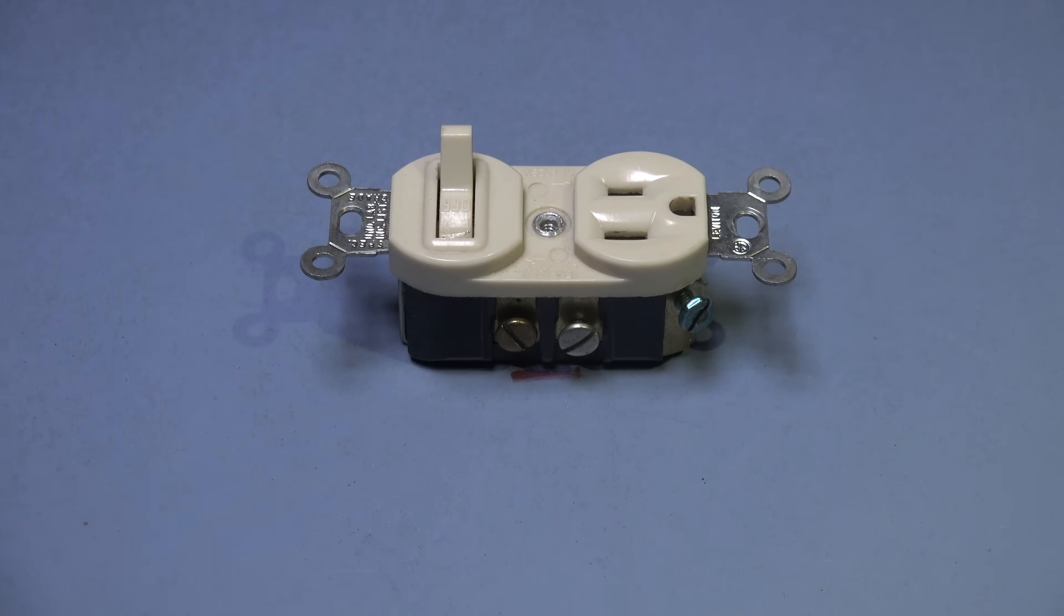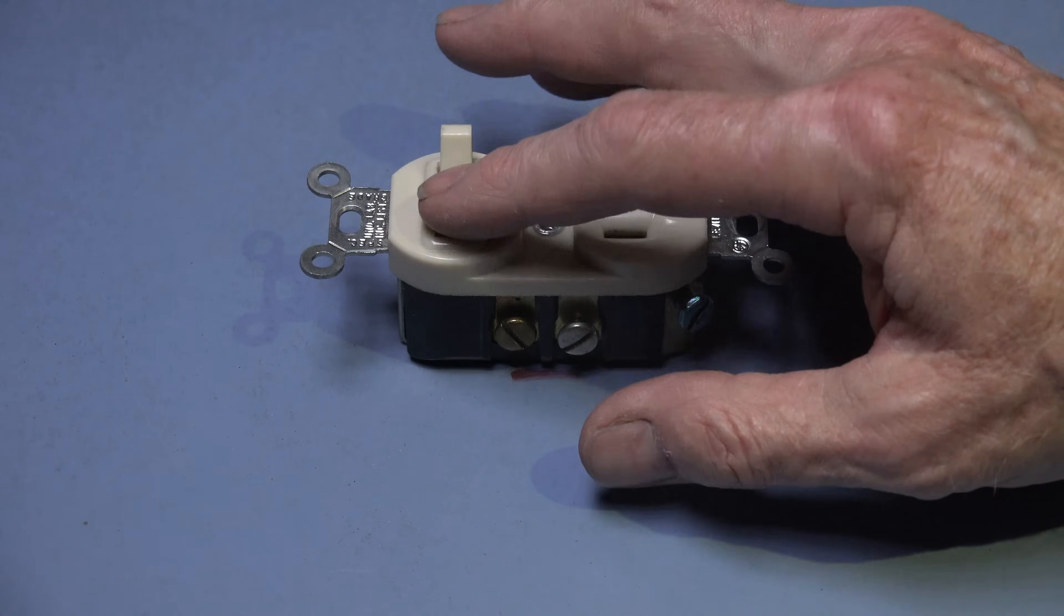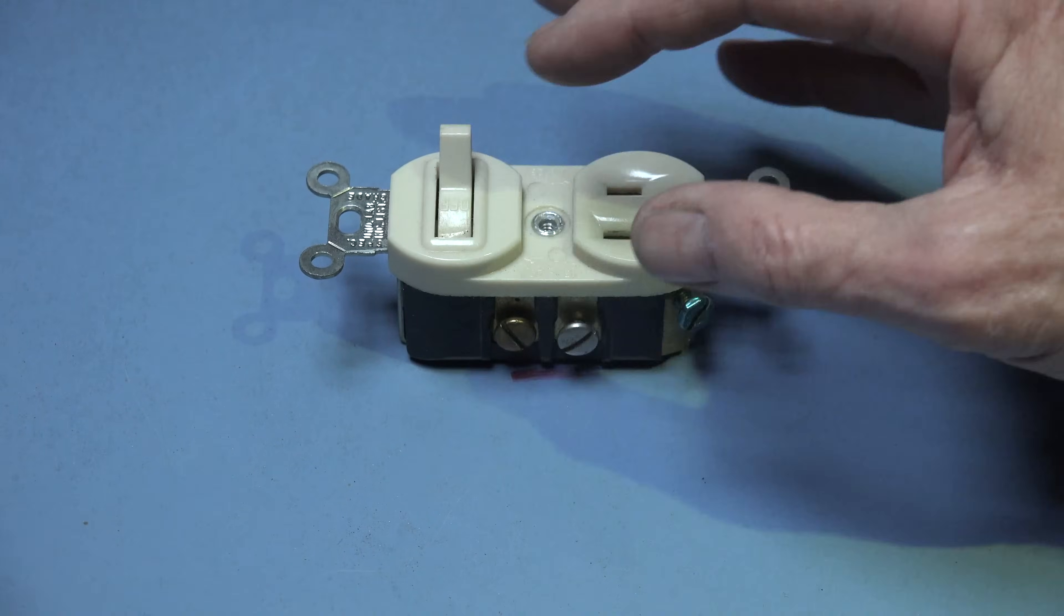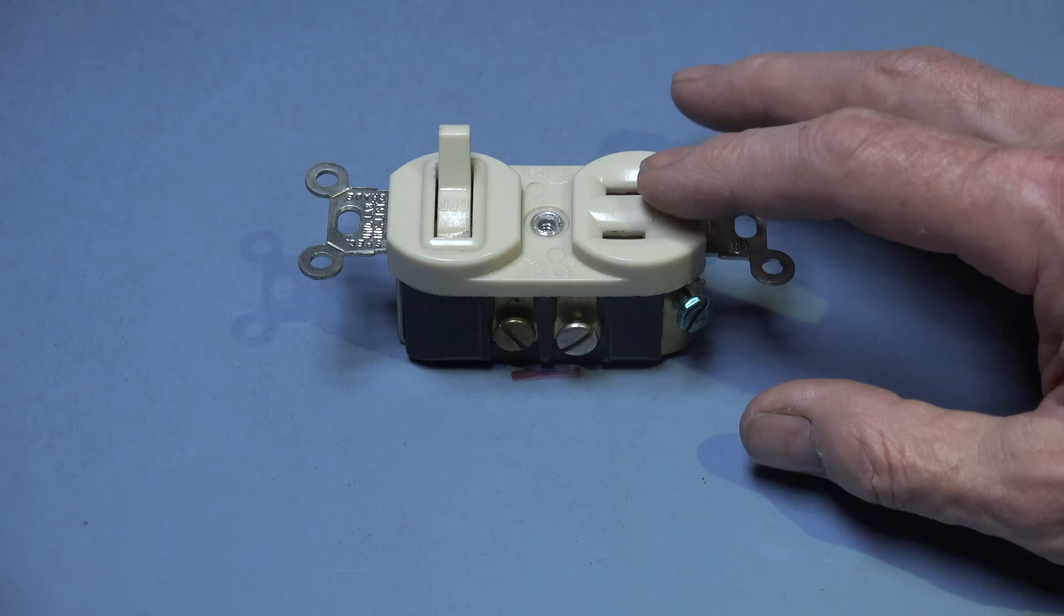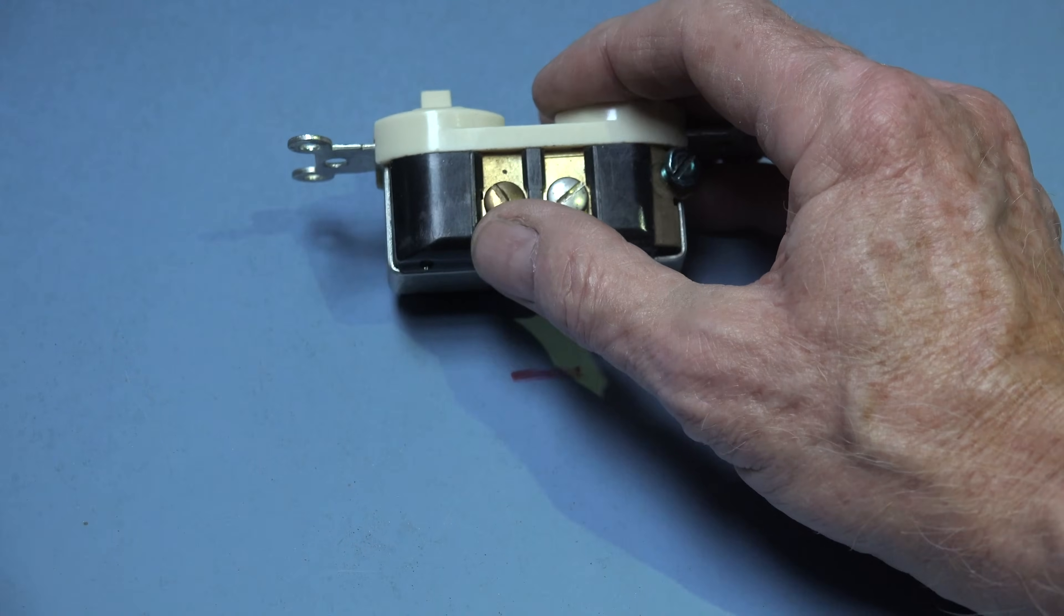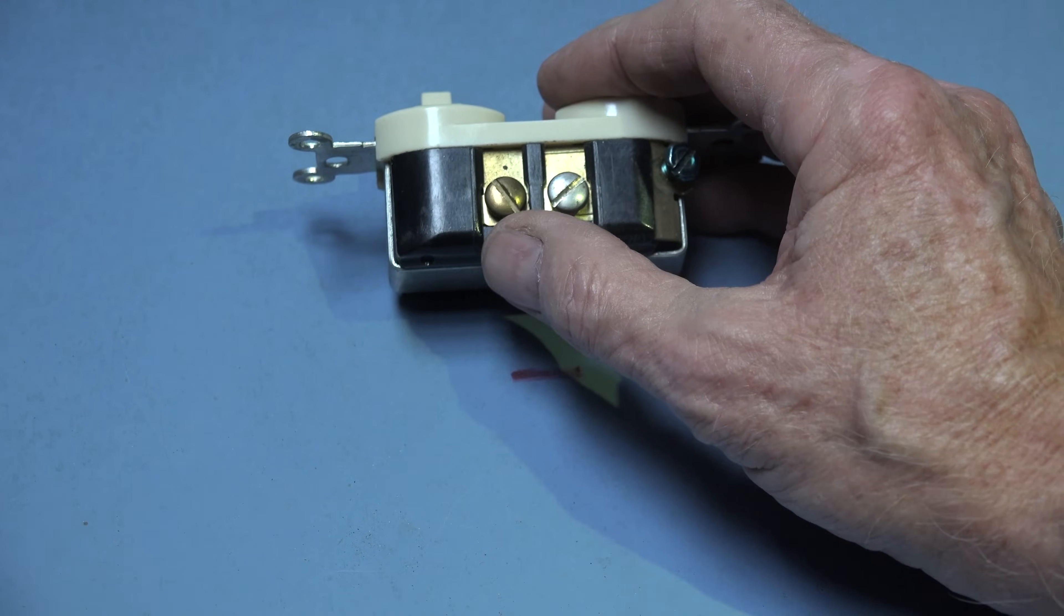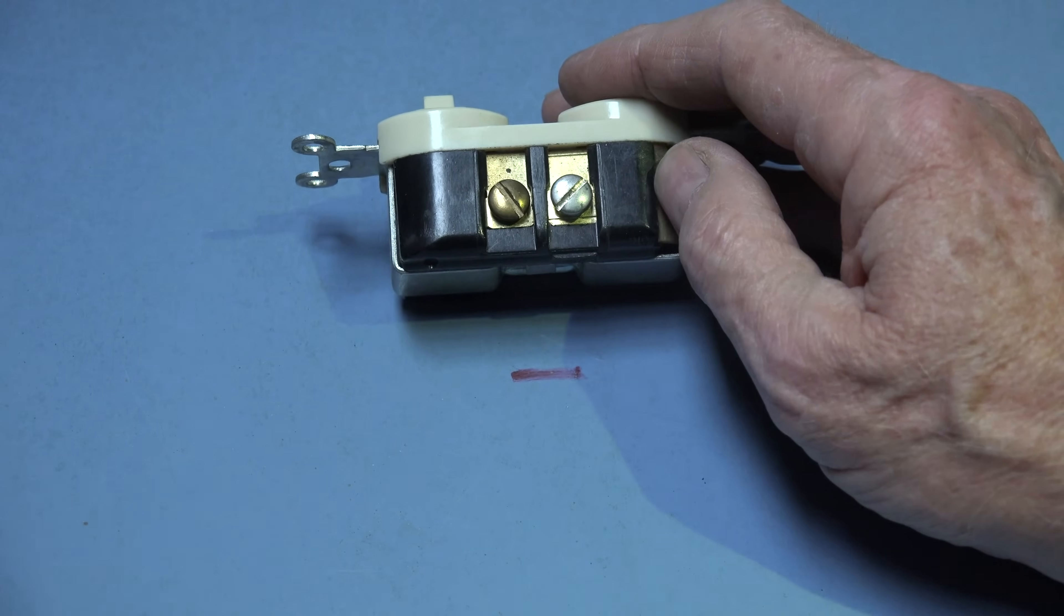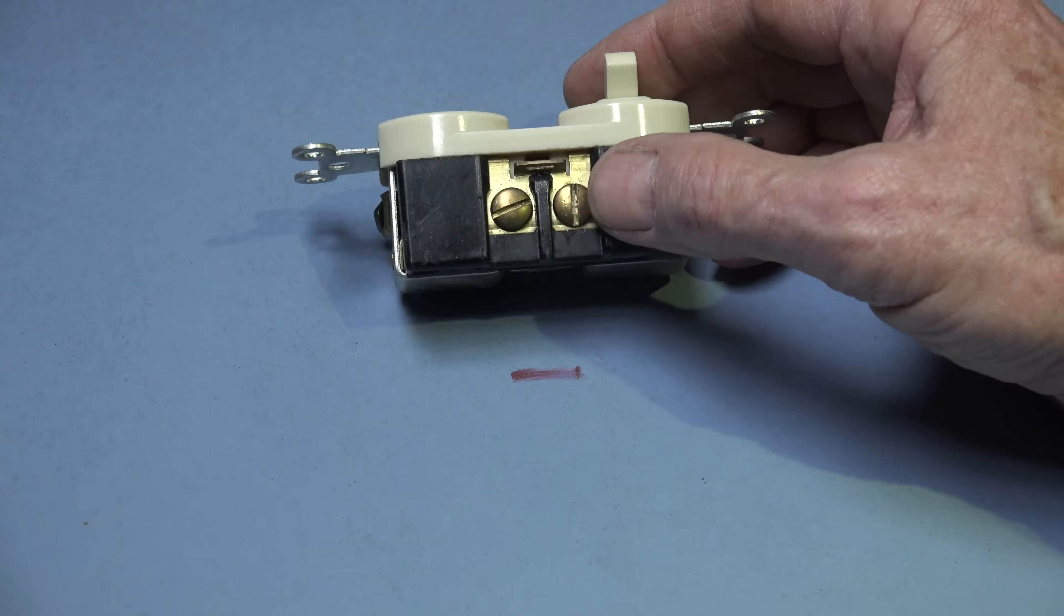Let's say I wanted to set this up so that when I turn this switch off it not only turned off the appliance but it also turned off the accessory outlet. In here I would put in my hot lead. You see I'm using the opposite side now. Hot lead here, neutral lead here, ground here.